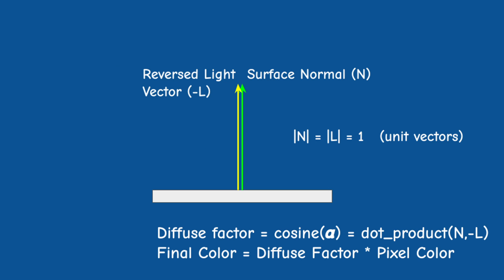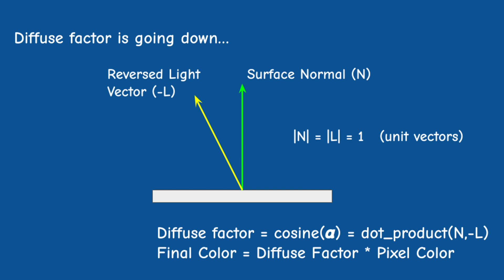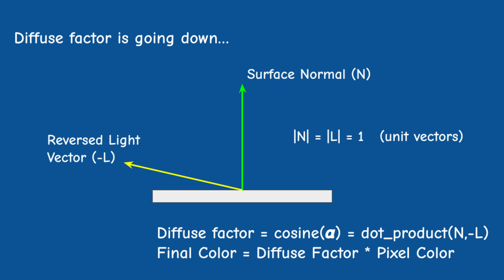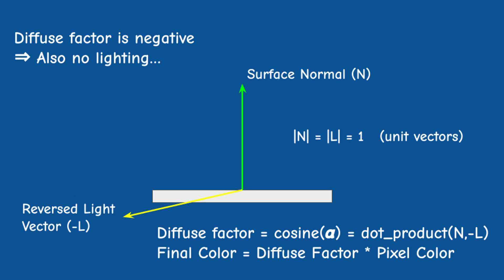When the two vectors are aligned, the result of the dot product is one and we get maximum lighting. As the angle between them increases, the result of the dot product decreases until we reach zero when the two vectors are perpendicular to each other. If the angle is more than 90 degrees the dot product is negative, and in this case we say that light hits the surface from behind so there is no light.